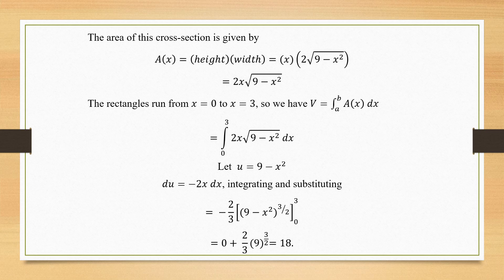Substituting the upper limit x = 3: u = 9 − 9 = 0, so 0^(3/2) = 0. Substituting the lower limit x = 0: u = 9, so 9^(3/2). The expression is −(2/3)[0 − 9^(3/2)] = (2/3) × 9^(3/2). Simplifying 9^(3/2) = 27, so (2/3) × 27 = 18. Therefore the volume of the wedge is 18.